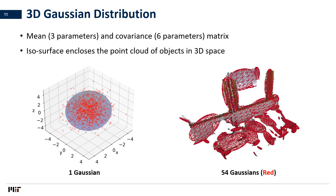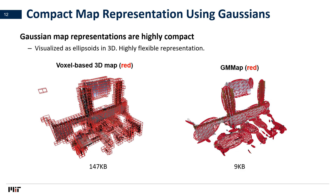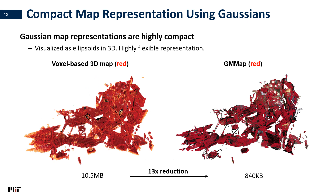For a more complicated 3D scene, multiple Gaussians are required. In this case, we use 54 Gaussians whose isosurfaces are outlined in red. Gaussians are very compact and have high representational power because their rotation, orientation, and scale can be changed to cover objects represented by multiple voxels. Thus, our Gaussian-based representation requires only 9 KB for this scene, achieving similar accuracy and consuming 16x lower memory than voxel-based representation. The similar trend holds for a much larger map constructed with multiple depth images — our GMM map consumes 840 KB, which is around 13x lower than the voxel-based approach.